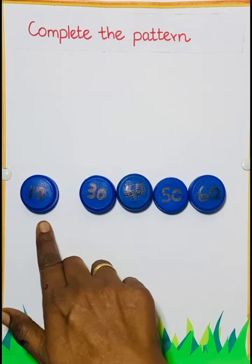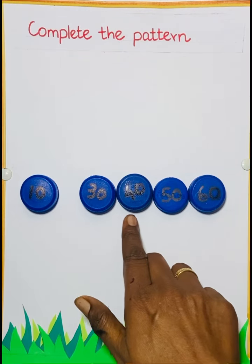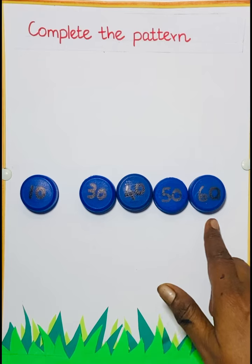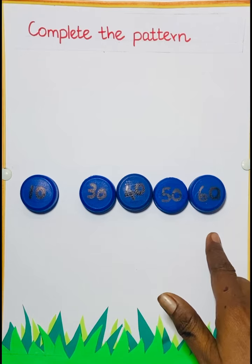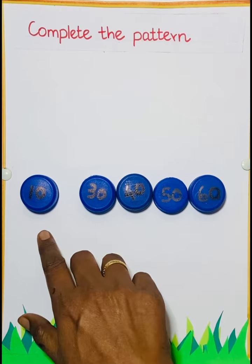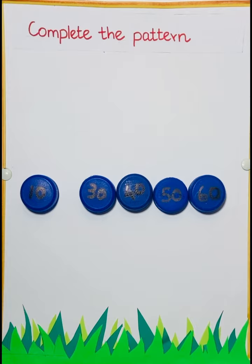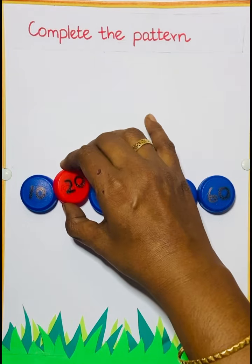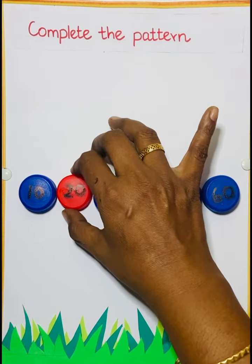Next one. 6, 10, 20, 30, 40, 50, 60. So this is skip counting of 10. So after 10, what number will come? 10, 20. So after 10, 20.